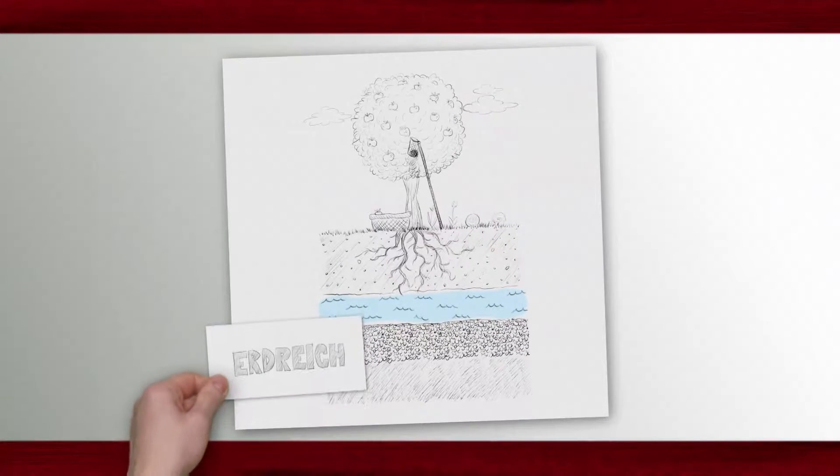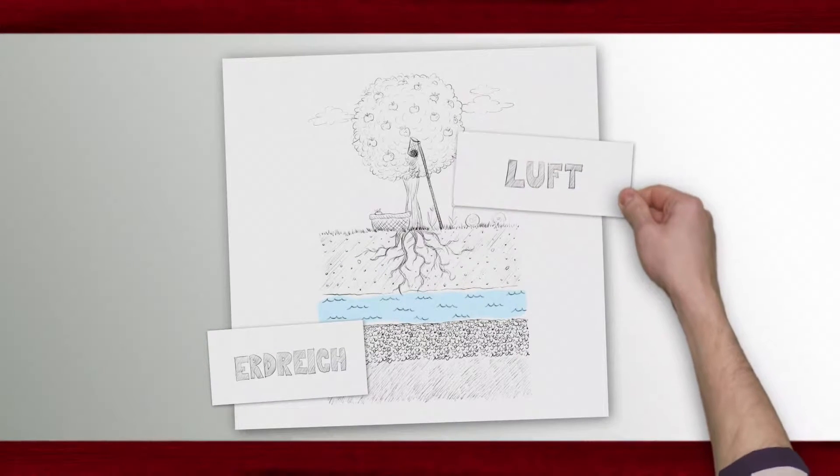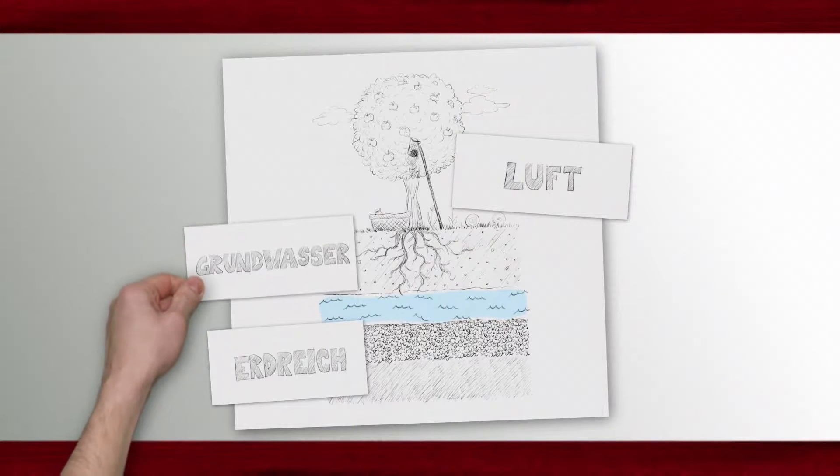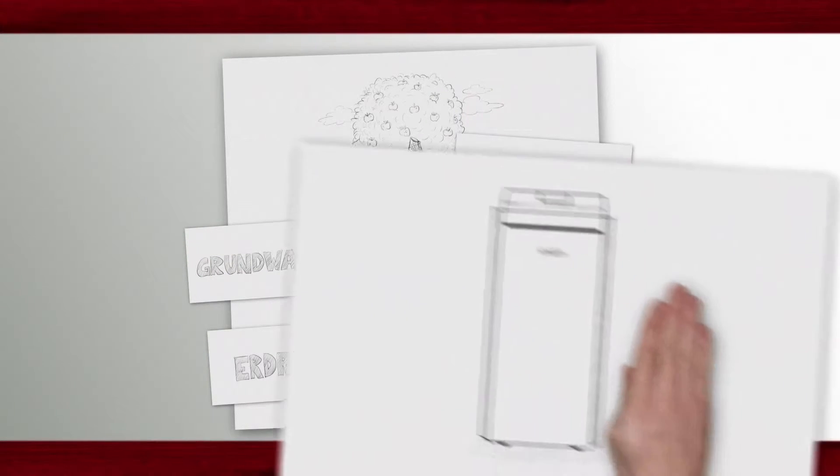The heat of the Sun is stored in the soil, the air and the groundwater. For each source of energy there is a special heat pump.